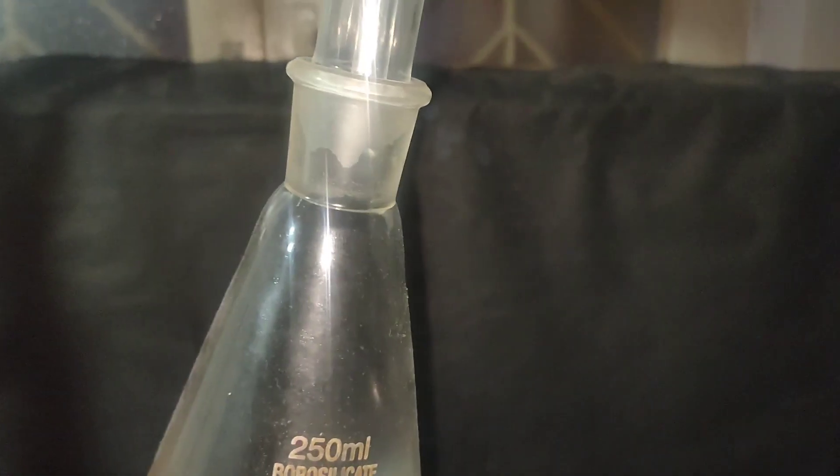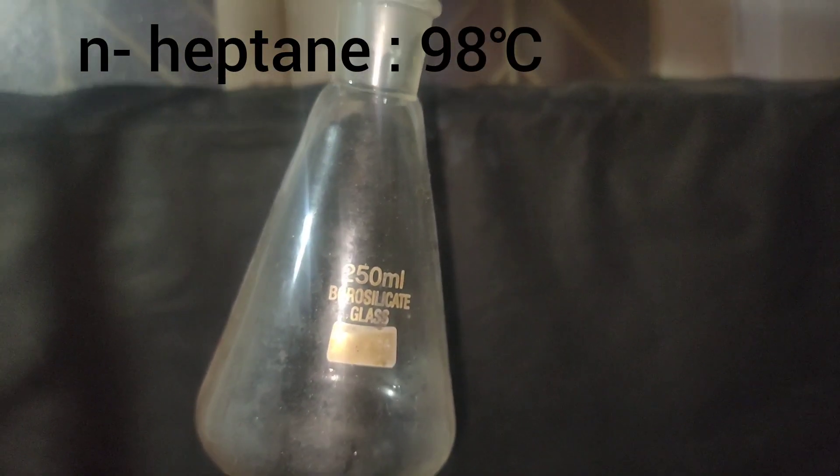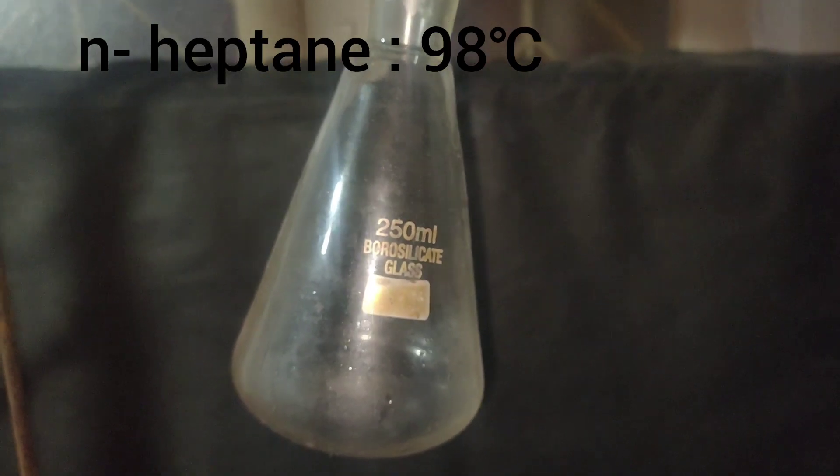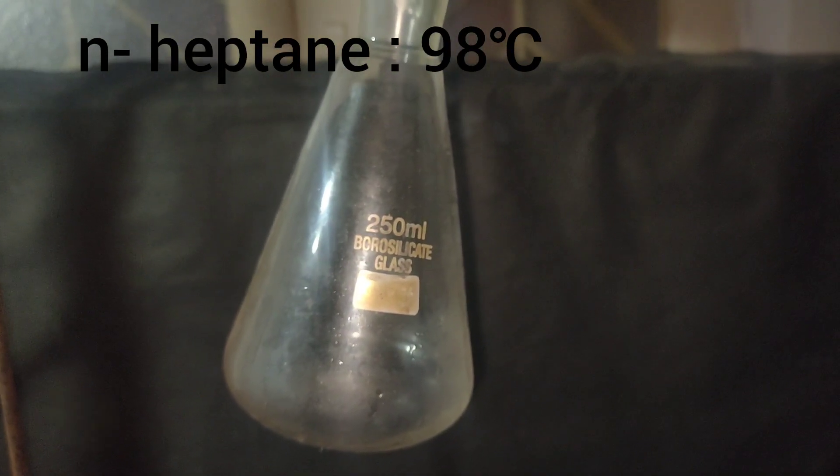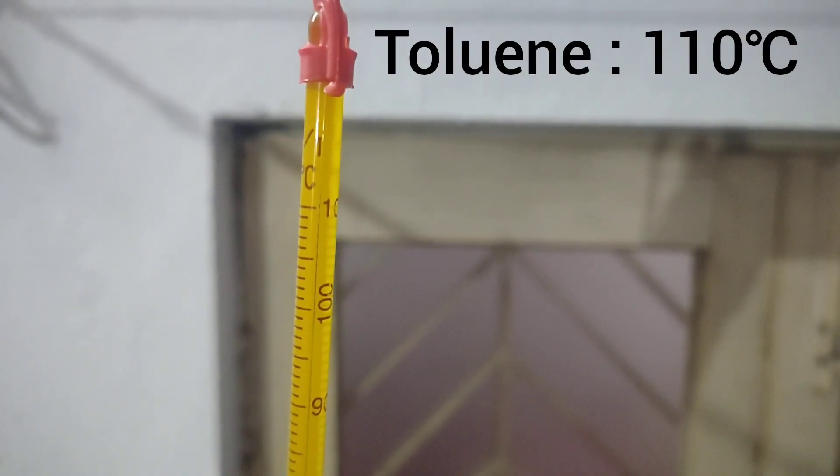Now the temperature went to 90 degree celsius and we started getting distillate in the receiver. However, this distillate consists of heptane and isomers of heptane. And heptane boils at around 98 degree celsius. When the temperature went above 105 degree celsius, I changed the receiver flask.